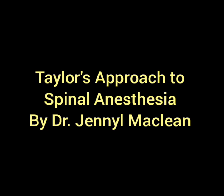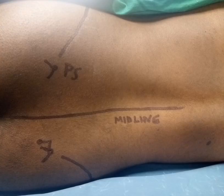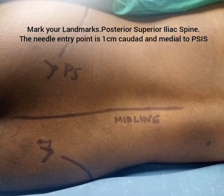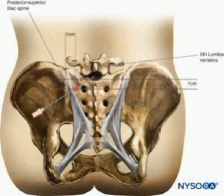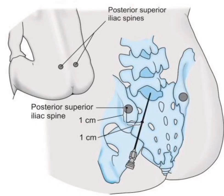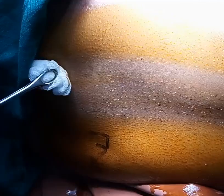Hello friends, today we will see about Taylor's approach of spinal anesthesia. With the patient in lateral position, mark your landmarks. The posterior superior iliac spine — the needle entry point is one centimeter caudal and medial to it, to enter into the L5-S1 intrathecal space. As you see here, the patient is in lateral position, the body parts are being painted and draped.